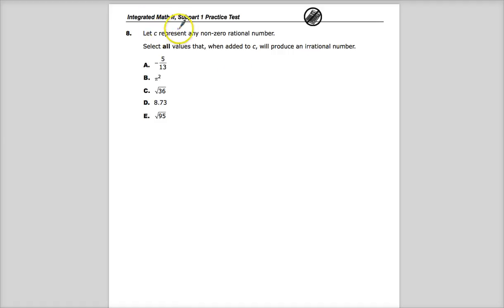So it says let C represent any non-zero rational number. Now a rational number is a number that you can create a fraction with. From a decimal perspective, it's a number that either repeats, and a good example of that is something like one-third. Because we are in a base 10 system with our decimals, the system doesn't really address one-third very well, because even though it's its own fraction, it does not terminate.